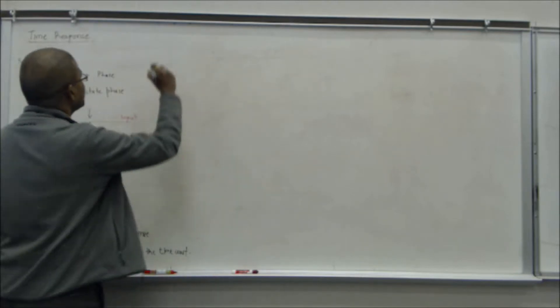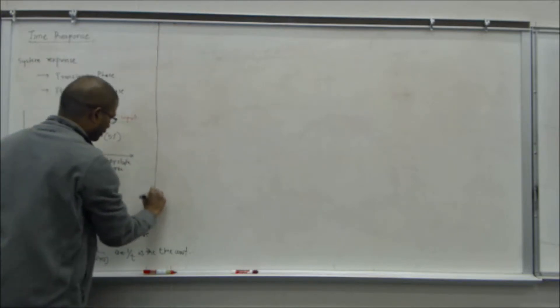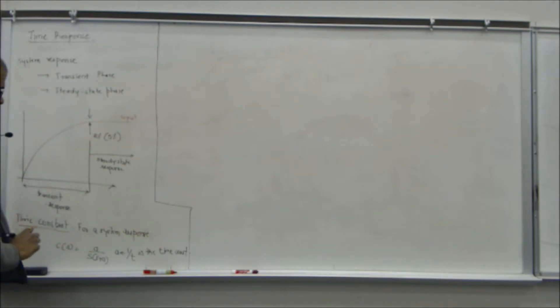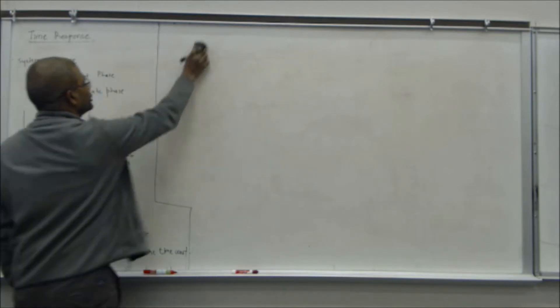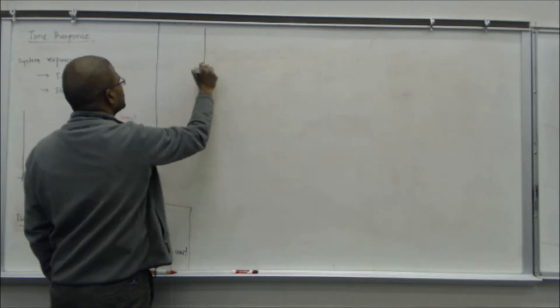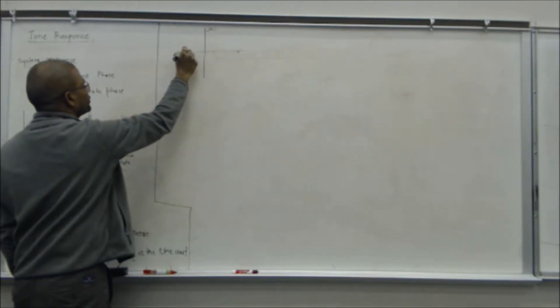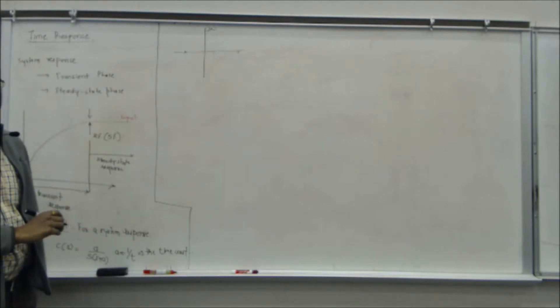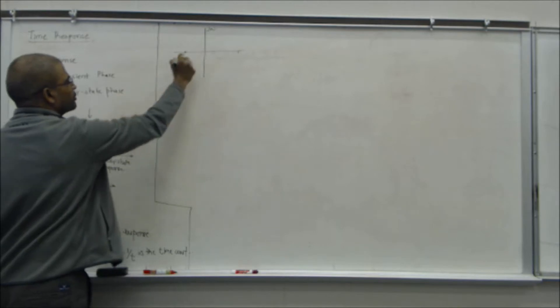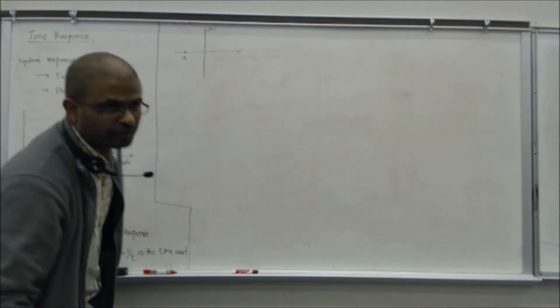This time constant just tells you how fast the system is going to respond. You can also look at this in the context of a pole-zero plot. Think about this. This will be your pole-zero plot, this is sigma and this is j omega, and your A will be somewhere here. The farther this A is, the system is going to respond that much faster.